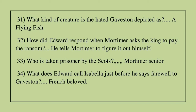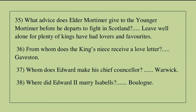Question 31: What kind of creature is the beheaded Gaveston depicted as? The answer is a flying fish. Question 32: How did Edward respond when Mortimer asks the king to pay the ransom? He tells Mortimer to figure it out himself. Question 33: Who is taken prisoner by the Scots? The answer is Mortimer Senior. Question 34: What does Edward call Isabella just before he says farewell to Gaveston? The answer is his French strumpet. Question 35: What advice does elder Mortimer give to the younger Mortimer before he departs to fight in Scotland? Live and be content, for plenty of kings have had lovers and favourites.